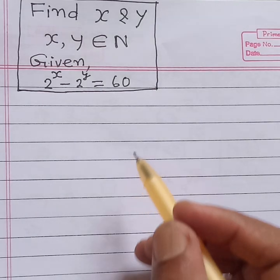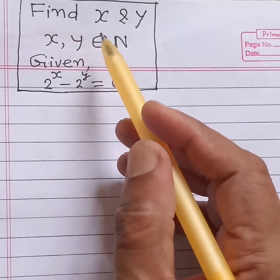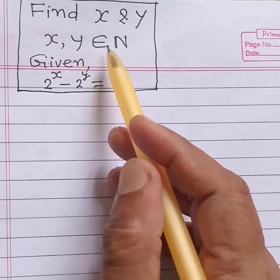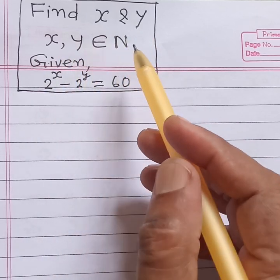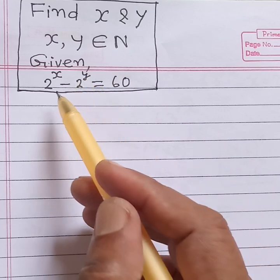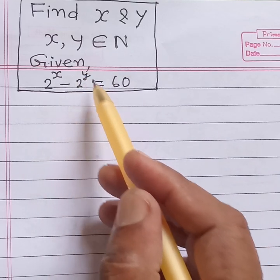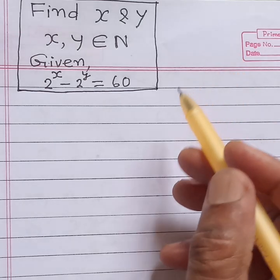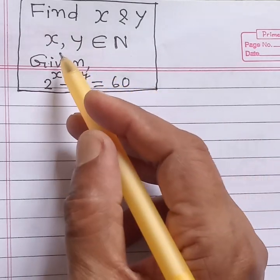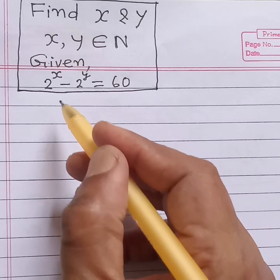Hello, welcome back. Find the value of x and y, where x and y belong to the natural numbers. Given equation: 2 to the power x minus 2 to the power y is equal to 60. Then what is the value of x and y? Now, solution.